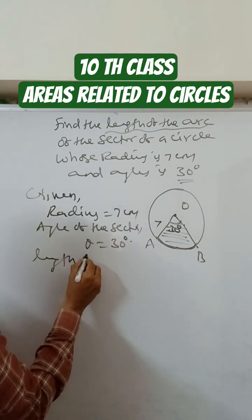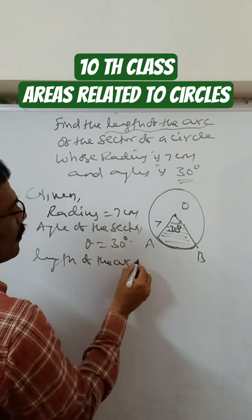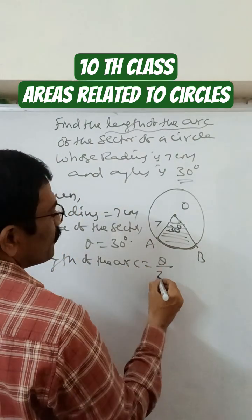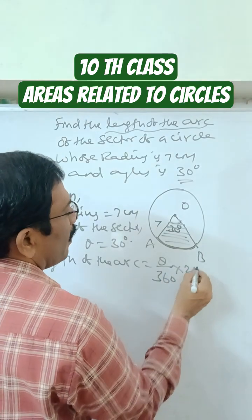Therefore, length of the arc - the formula is theta by 360 into 2 pi r.